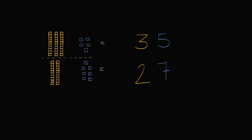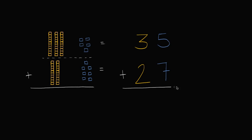The second number here, I have two tens, and I have one, two, three, four, five, six, seven ones. Two tens and seven ones. Now what I want to do is I want to add all of these numbers, or I want to add these two numbers together. I want to add 35 plus the 27, or another way of thinking about it, I want to add all of these blocks together.